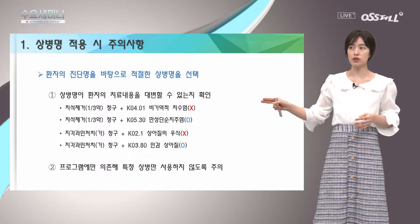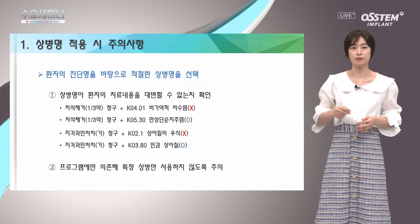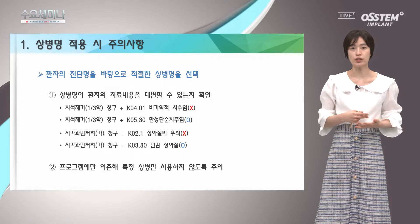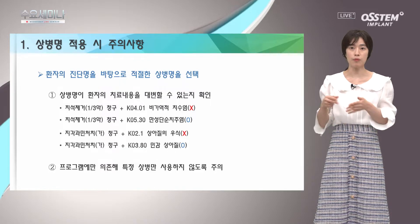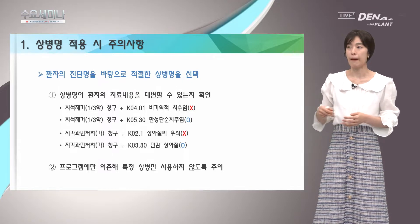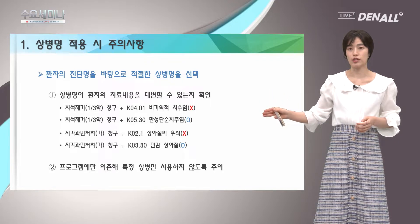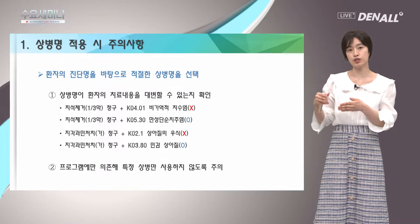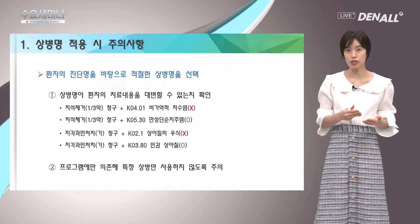예를 들어 치석제거 3분의 1악 수가를 청구할 때 K04.01 비가역적 치수염을 사용하면 안 됩니다. K04.01은 근관치료 시 사용하는 상병명으로, 치수의 염증 상태이기 때문에 치석제거로 치료할 수 없어 인정이 안 됩니다. 반대로 치석제거 청구 시 만성단순치주염이나 만성복합치주염 등 K05로 시작하는 치주염 범주 혹은 치은염을 사용하시면 문제없이 청구를 인정받을 수 있습니다.